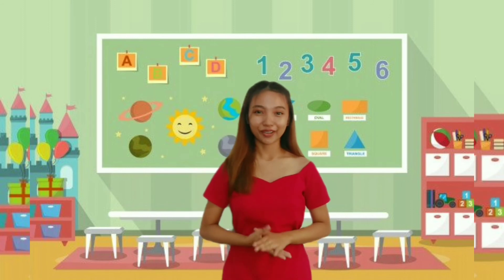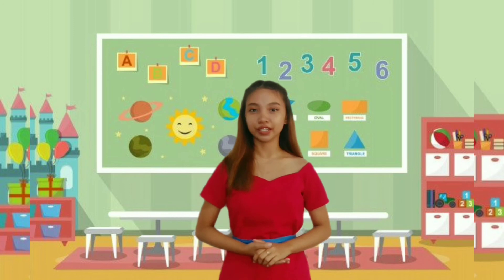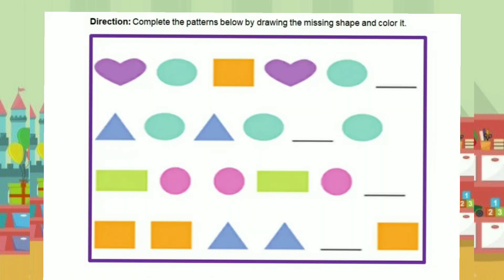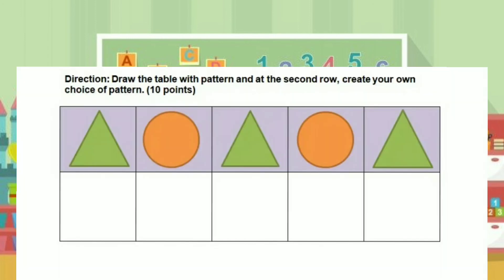And now class, we will be having an individual activity. Complete the patterns below by drawing the missing shape and color it. And here's your assignment for today: draw a table with a pattern and at the second row, create your own choice of pattern.